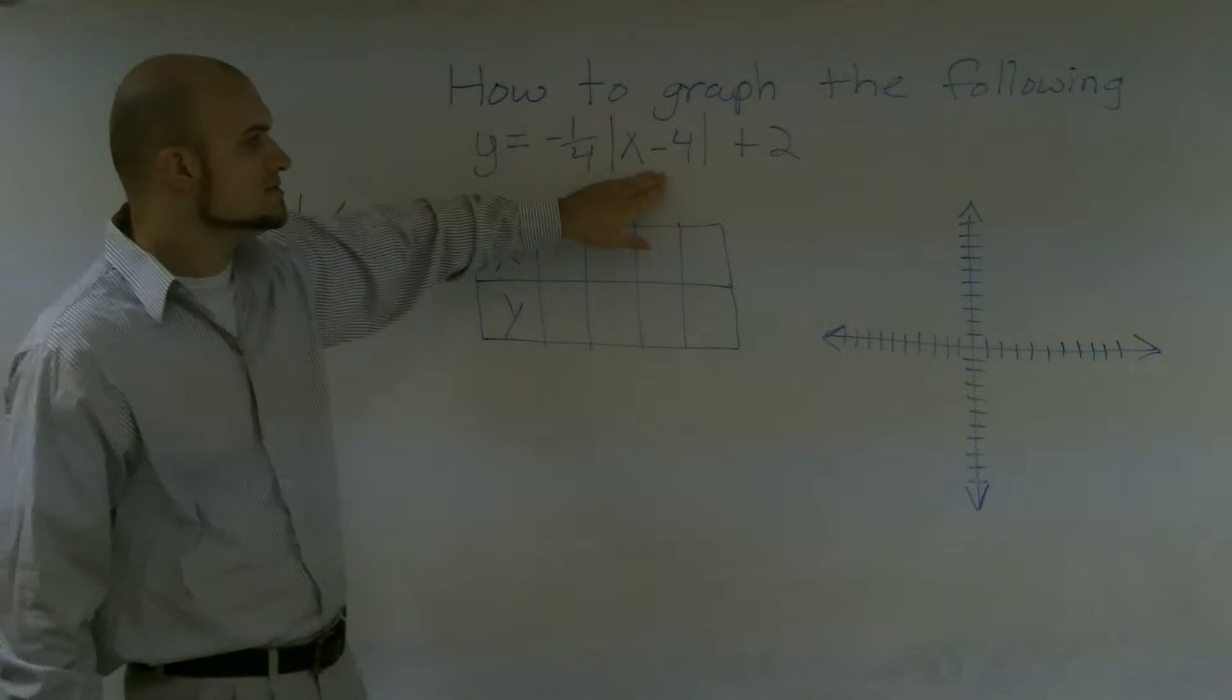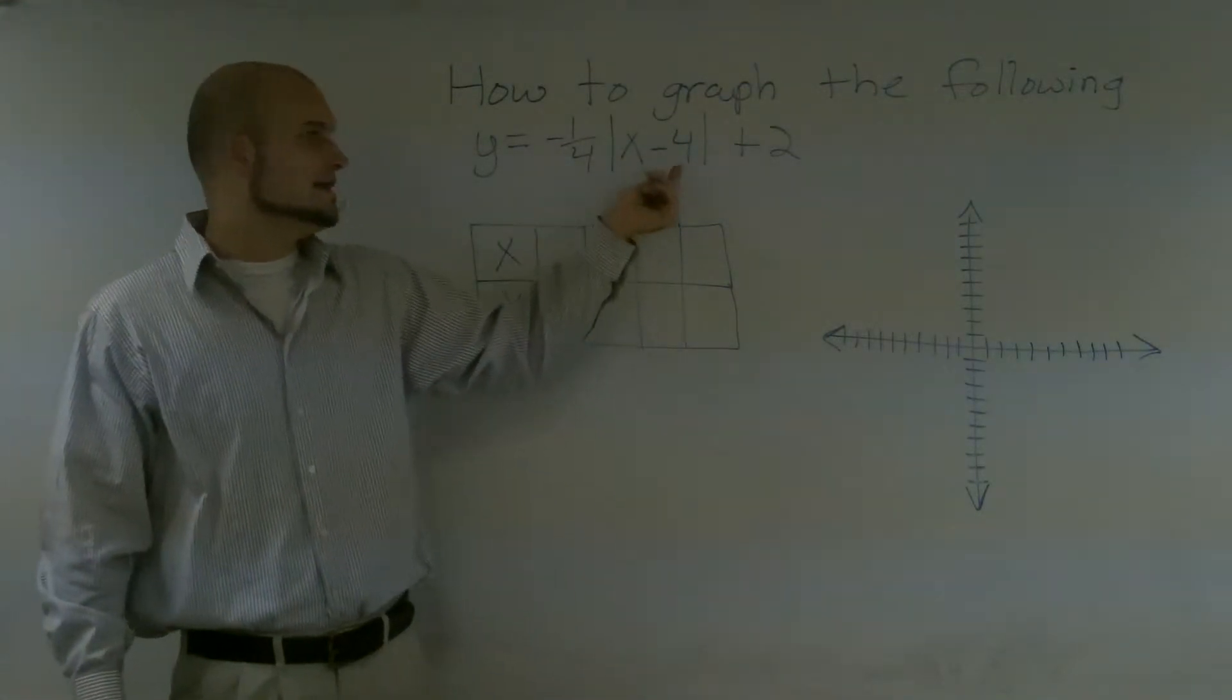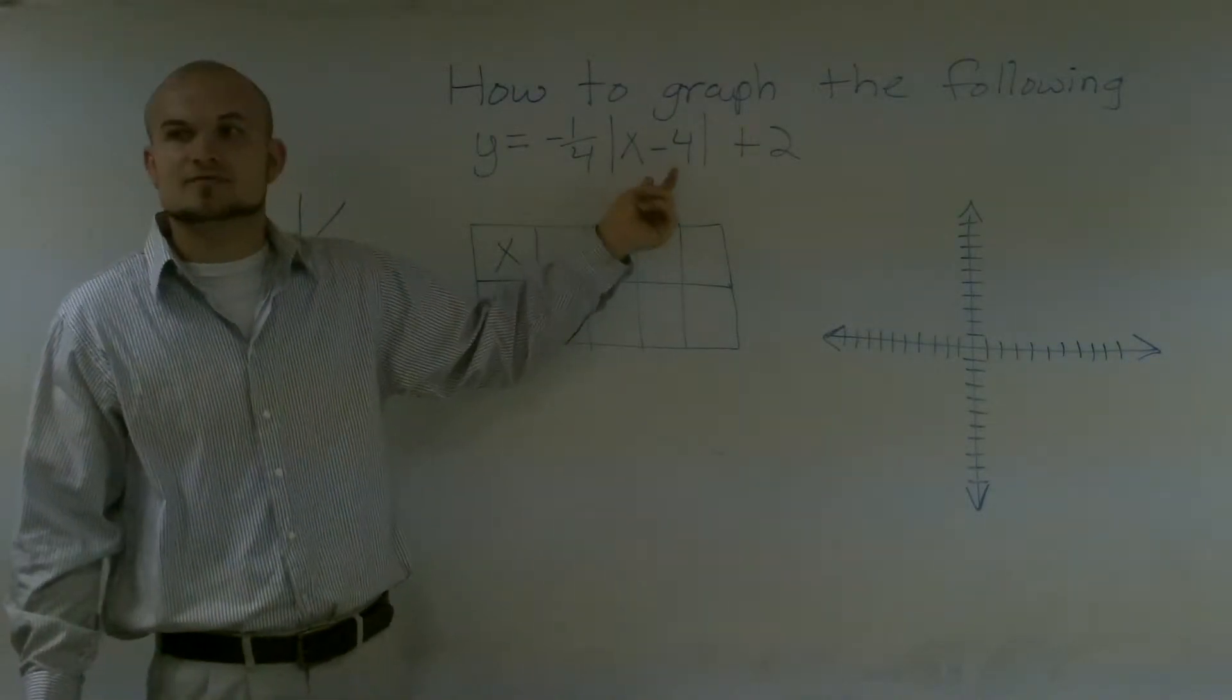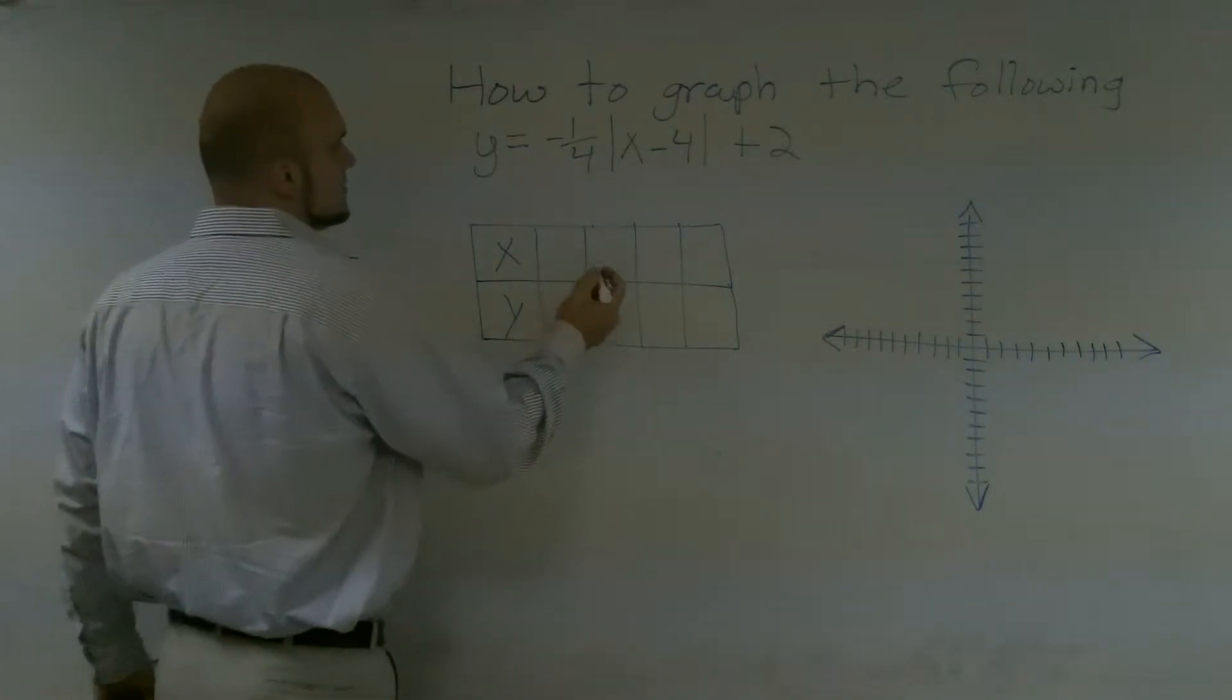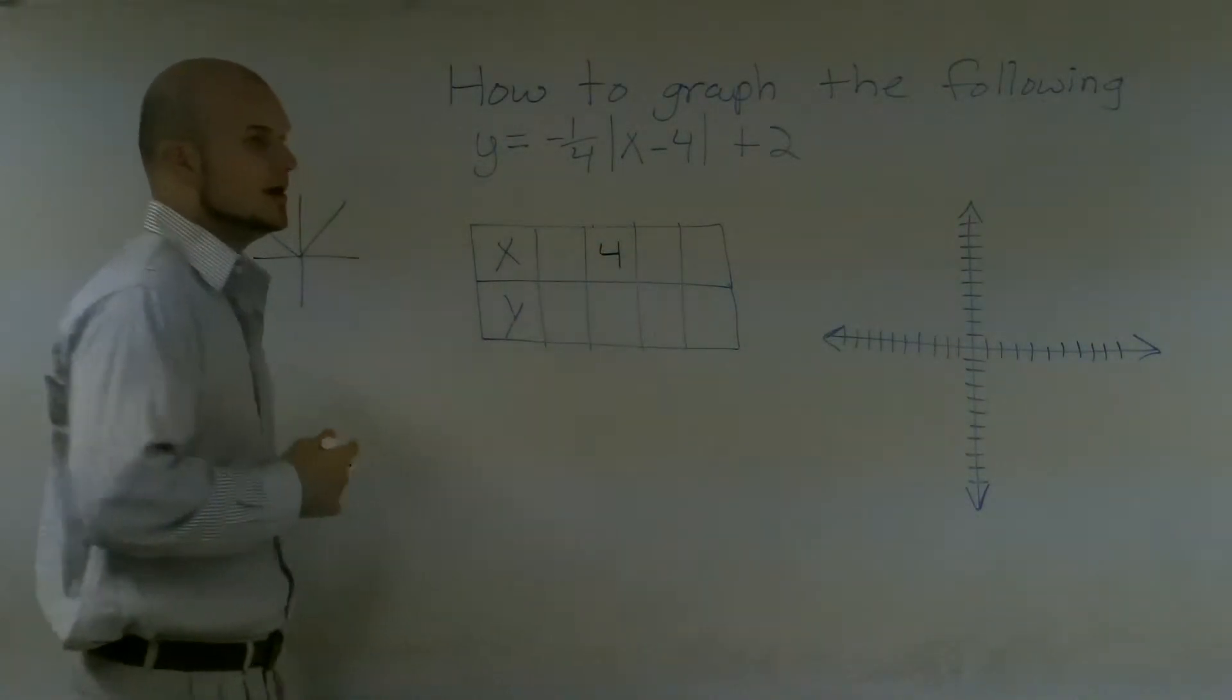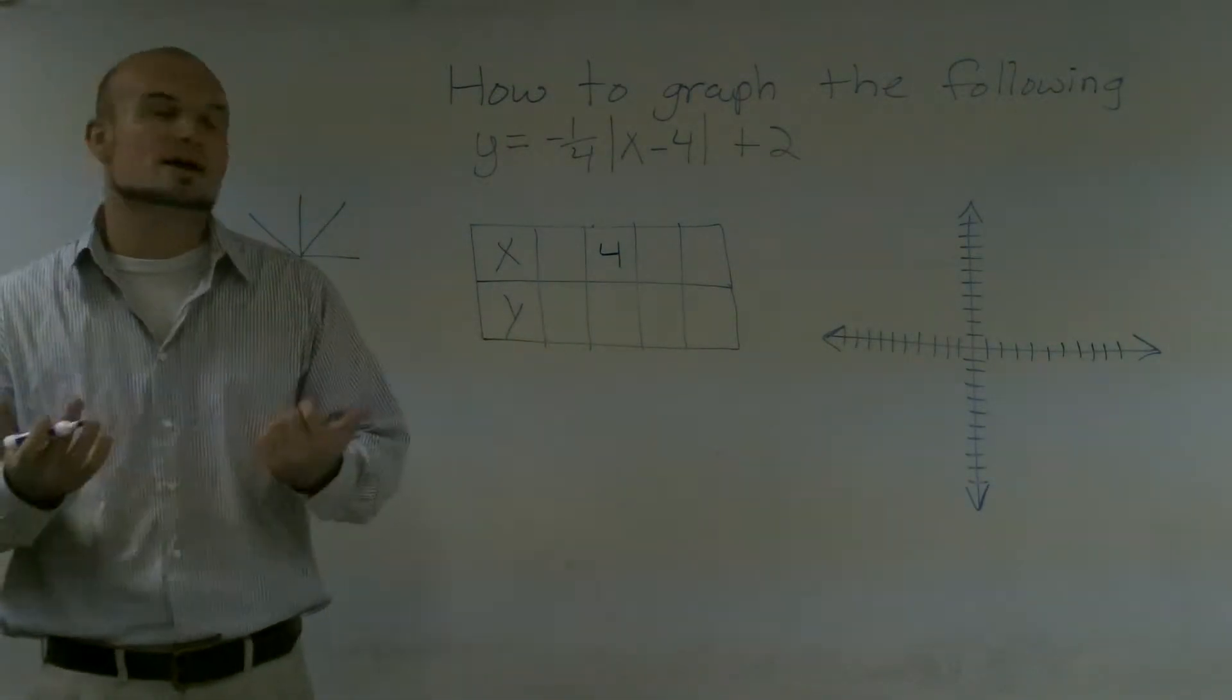So if I look inside this absolute value, I see that it's x minus 4. So to make this 0, I would just have to plug in a positive 4, correct? So I'll have one point would be my 4. And now from 4, I want to pick a point that's going to be less than 4, and that's also going to be greater than 4.